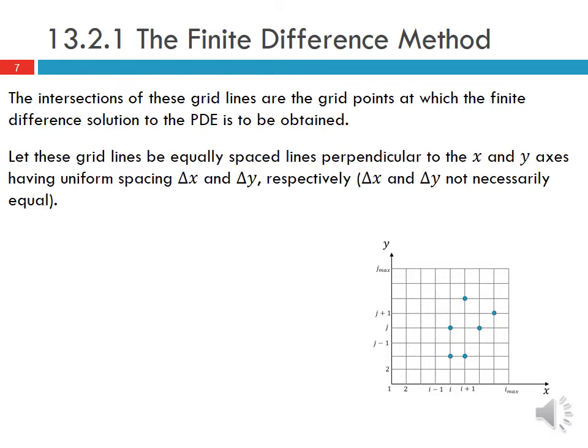If we let these grid lines be equally spaced lines perpendicular to the x and y axes, with uniform spacing delta x and delta y respectively, note that delta x and delta y don't necessarily have to be equal to each other. But if we assume that along a particular axis the grid spacing is equal, then between each of the lines in the x-axis is always delta x, and between each of the lines in the y-axis is always delta y.